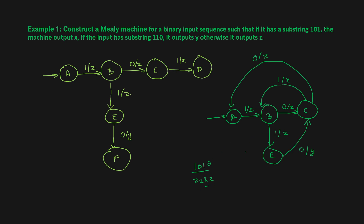Now let's trace 1,1,0,0. You are in state a, get input 1, go to state b with output z. Get another 1, go to state e with output z. Get 0, the output is y and you go to state c. So once you encounter 1,1,0 you get output y. Then you get 0, go to state a with output z.